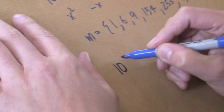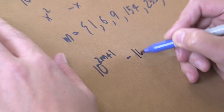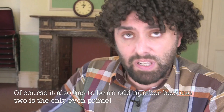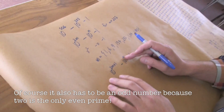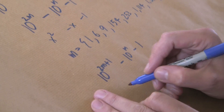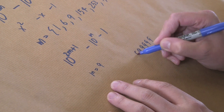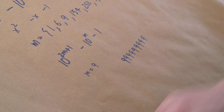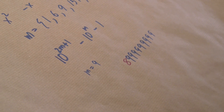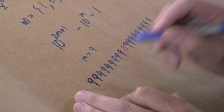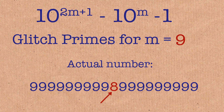But maybe also — what happens if the glitch was right in the middle of the number? I actually looked into that as well. That's a different formula: 10 to the 2m plus 1, take 10 to the m, take 1. It has to have an odd number of digits because it needs to have a middle. The first prime we can find is at m equals 9 — that's nine 9s, then an 8, then nine 9s.